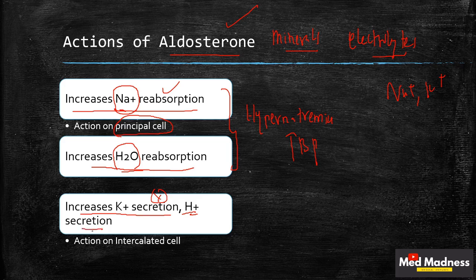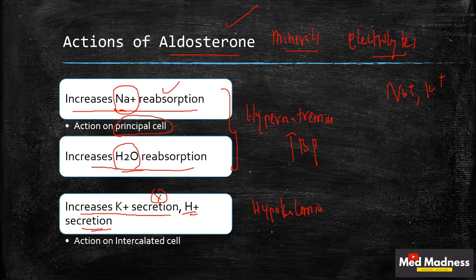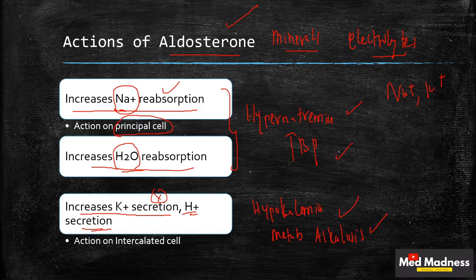Aldosterone also increases potassium secretion — potassium is excreted into the urine — as well as hydrogen ion secretion into the urine. A decrease in potassium ions in the body results in hypokalemia. If more hydrogen ions are lost in the urine, you retain more bicarbonate, resulting in a state called metabolic alkalosis. These are very important points.